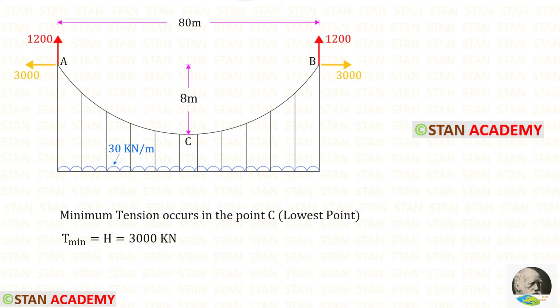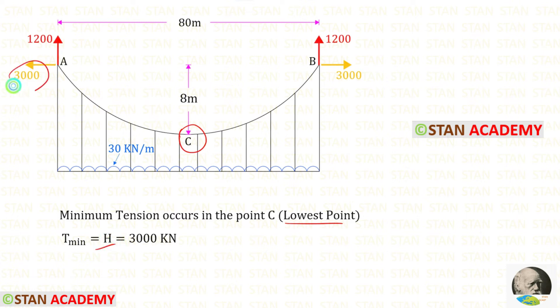Now let us find the minimum tension. The minimum tension occurs at point C, which is the lowest point, and the minimum tension is the horizontal thrust itself — 3000 kilonewtons.